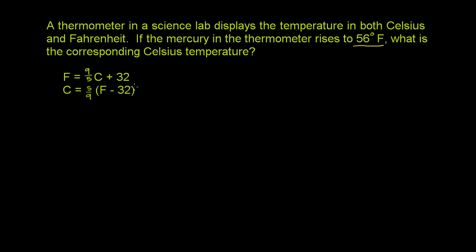They give us two formulas: if we know the Celsius temperature, how do we figure out the Fahrenheit temperature? Or if we know the Fahrenheit temperature, how do we figure out the Celsius temperature? These are actually derived from each other, and you'll learn more about that when you do algebra. Maybe in another video we'll explain how to derive these — it's actually kind of interesting. It involves a little bit of algebra.